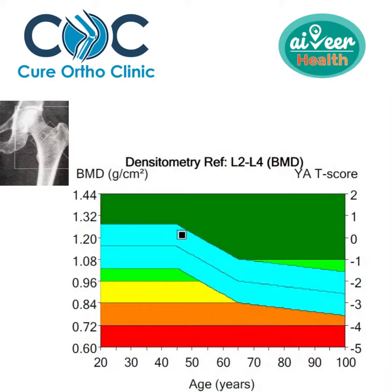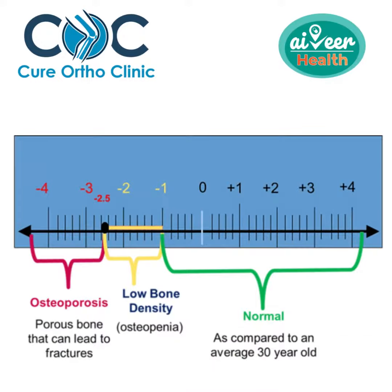The scores used are T-score and Z-score. If the T-score is less than minus 2.5 — for example, minus 2.8 or minus 3.5 — then we have a diagnosis of osteoporosis.